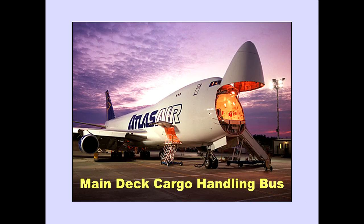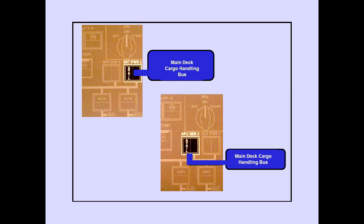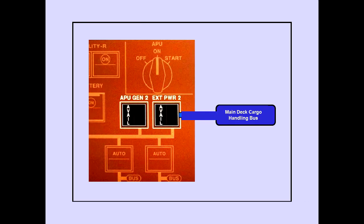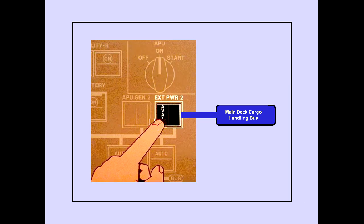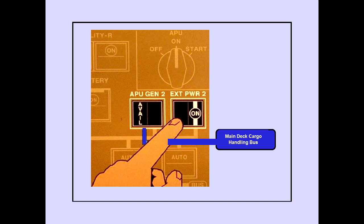The main deck cargo handling bus is powered on the ground only and provides electrical power for cargo handling equipment on the main deck. It is powered automatically whenever either external power 2 or APU generator 2 is available. If both power sources are available, external power 2 powers the bus. External power 2 or APU generator 2 cannot power main airplane electrical buses and the main deck cargo handling bus at the same time; selecting the power source on will de-energize the bus. If both are available, selecting external power 2 on will transfer main deck cargo handling power to APU generator 2.